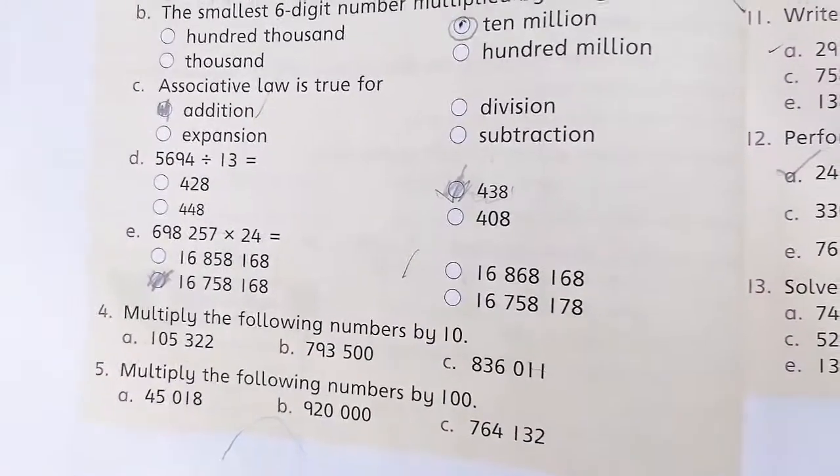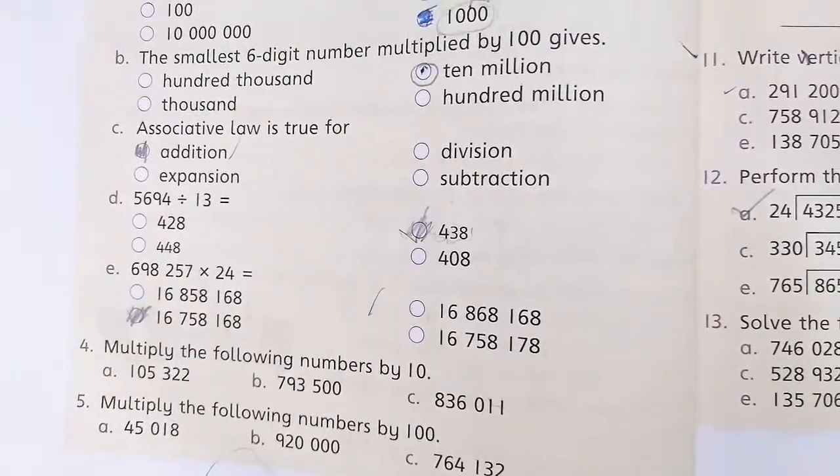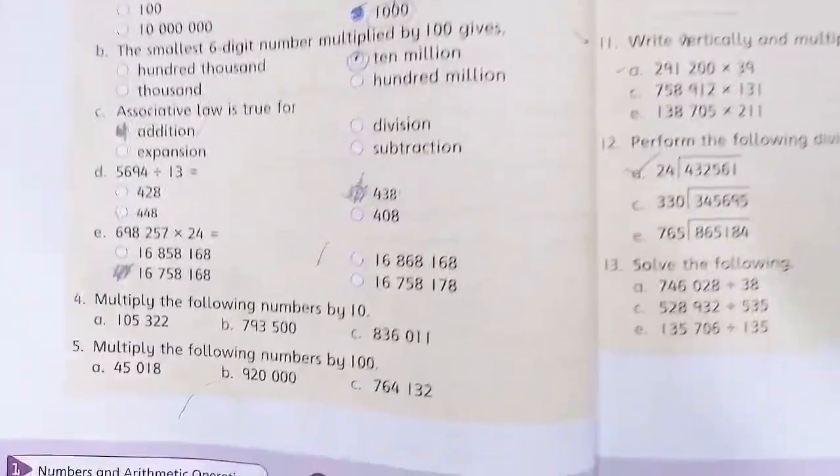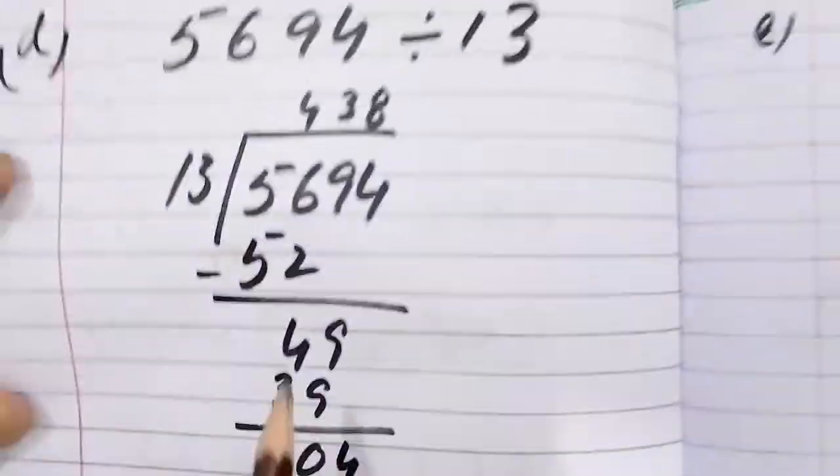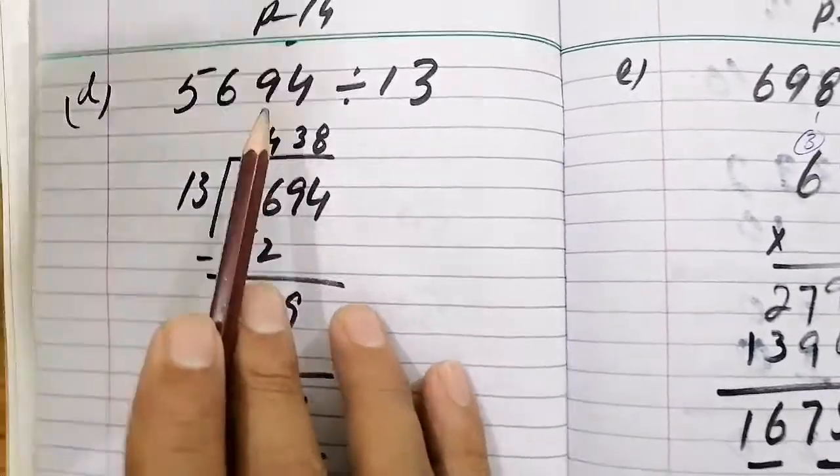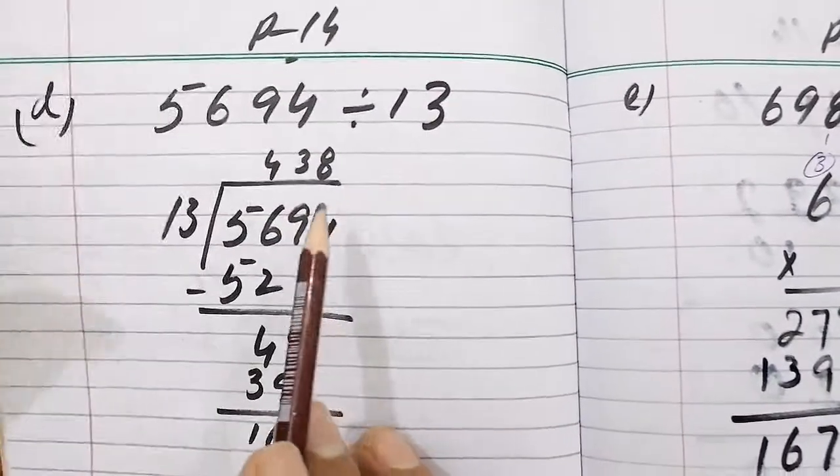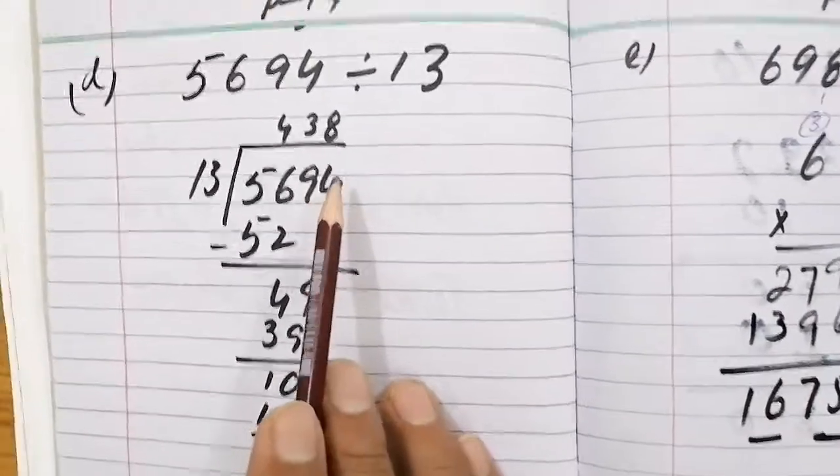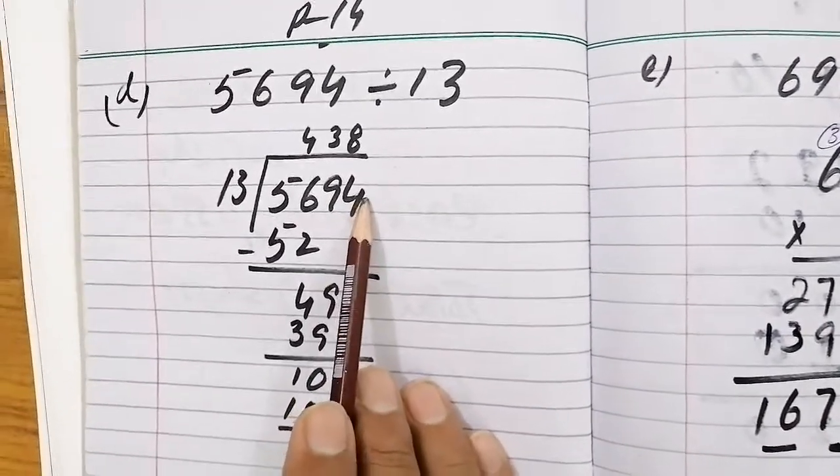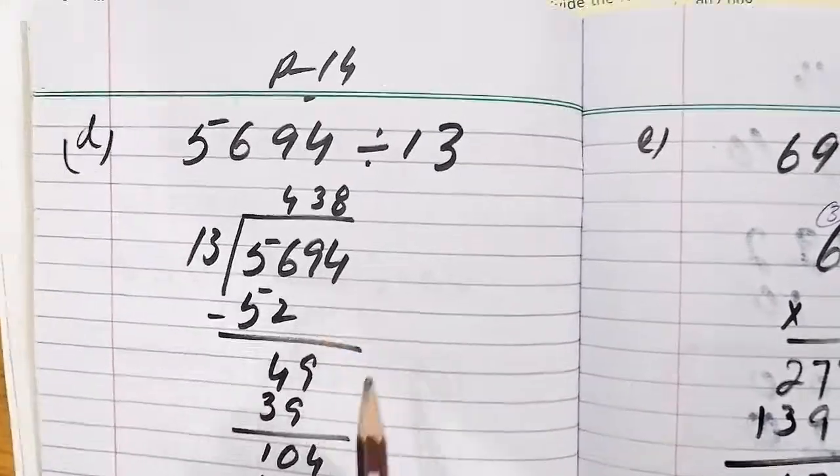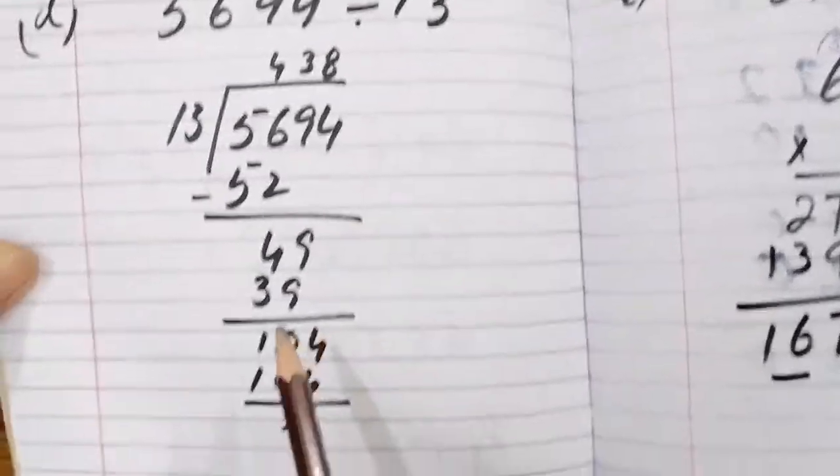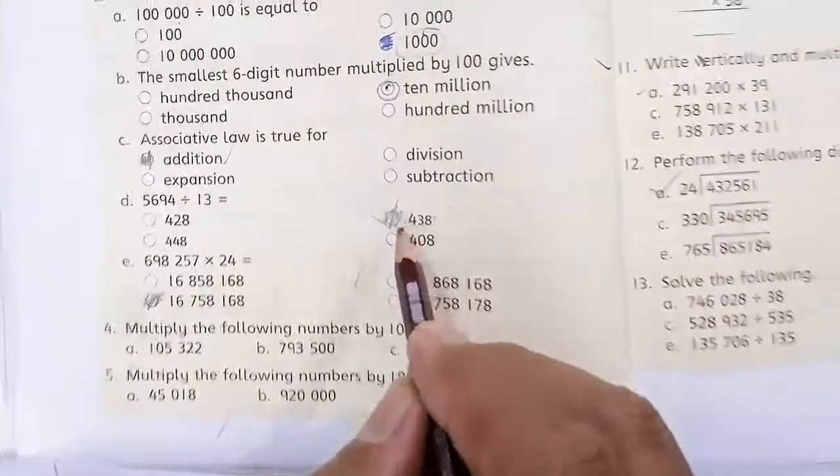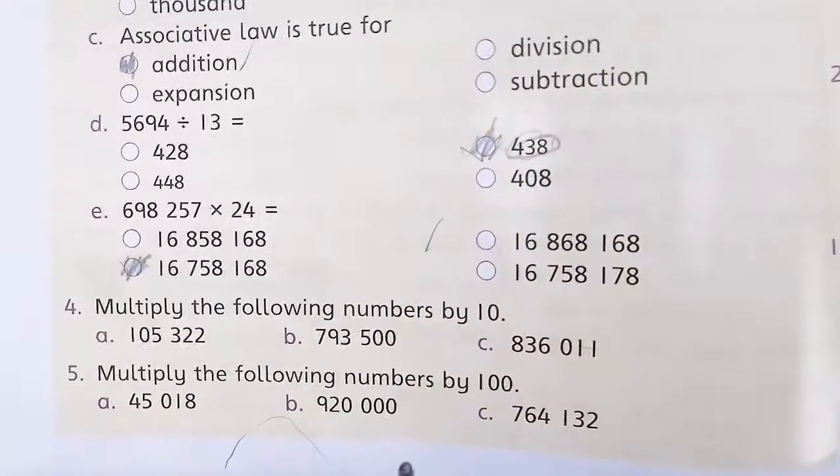Next, 5694 divided by 13. If you divide it, then your answer is 438. I have done it for you. This answer is 438.